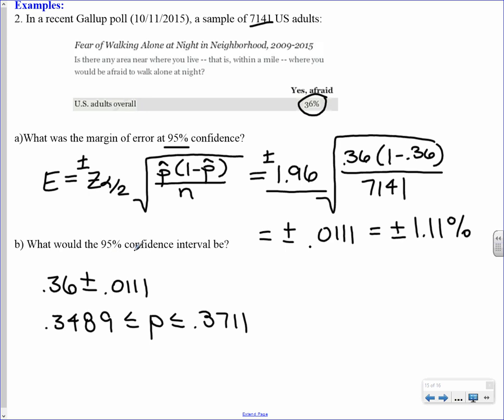What would the 95% confidence interval be? Well, we have our point estimate from here, and we just calculated our margin of error. So we're going to take our point estimate and add and subtract our margin of error, and we get that our 95% confidence interval is from 0.3489 up to 0.3711. So if you've already calculated your margin of error, to create your confidence interval, you just add and subtract that error onto your point estimate.